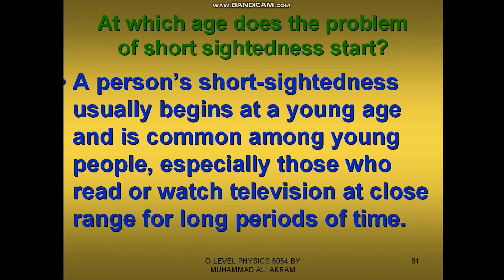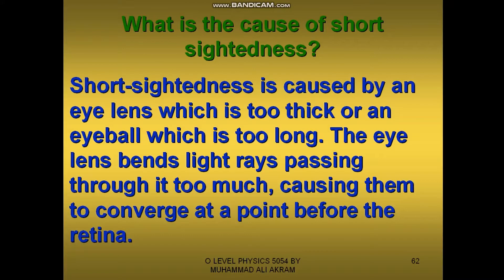At which age does the problem of short sightedness start? A person's short sightedness usually begins at a young age and it is common among young people, especially those who read or watch television at close range for long periods of time. So dear students, please avoid that.